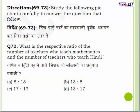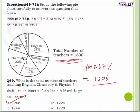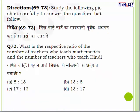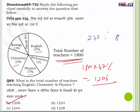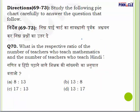Question number 70: Find the ratio of teachers who teach Mathematics to those who teach Hindi. Mathematics is 13 percent and Hindi is 8 percent. Since the total is constant on both sides, the ratio is simply 13:8. Answer is 13:8.